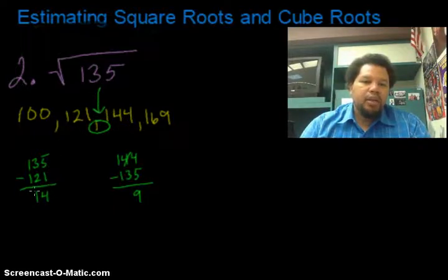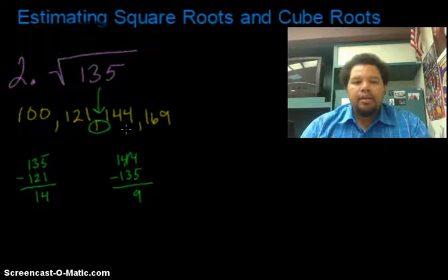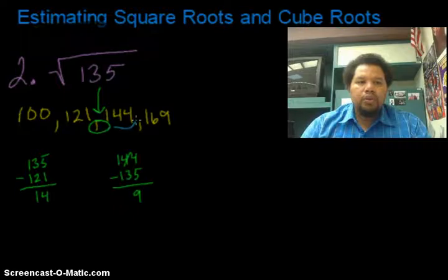So I just kind of subtract them. And I see that 135 is 14 units away from 121, and 135 is 9 units away from 144. So it's closer to 144.